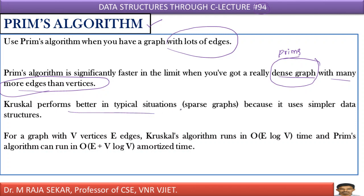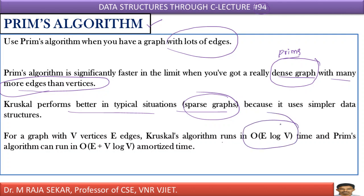Kruskal performs better in typical situations, meaning sparse graphs. Sparse means the number of edges is less — if you have fewer edges, you can apply Kruskal's algorithm. Regarding complexity, Kruskal's algorithm complexity is order of E log V, where V is number of vertices and E is number of edges. Whereas Prim's algorithm complexity is order of E plus V log V.